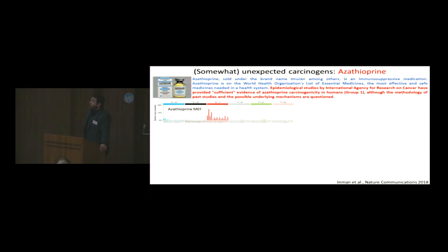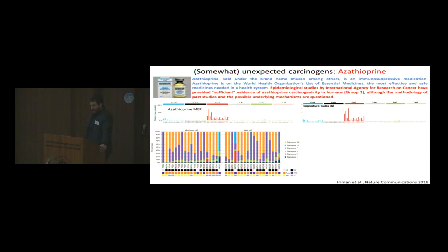In that paper, we took azathioprine and we exposed mouse embryonic fibroblasts. This is the mutational signature that we got, signature 32. This is the signature 32 that we got from patients that have had transplant surgery, that have taken azathioprine. Each one of these patients had high levels of signature 32. Not only did they have high levels of signature 32, but the more immunosuppressant that they had, the more mutations they had from that drug.